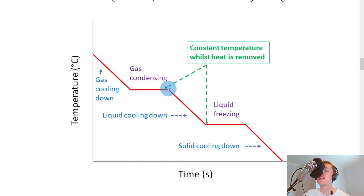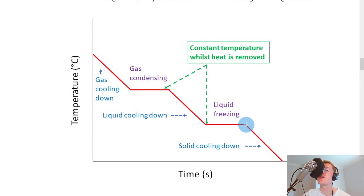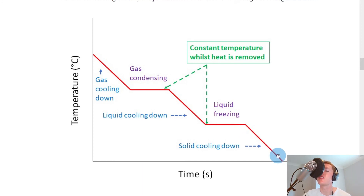Taking our liquid and continuing to remove heat from it, its temperature will decrease over time until it reaches its freezing point. It will start to freeze at this point and take time to do so whilst we continue to remove heat. Then all of the liquid has completely frozen into a solid. Again, we've got a constant temperature whilst the liquid was freezing into the solid. If we continue to remove heat from the solid, it just cools down and its temperature decreases over time, but we don't get any other changes in state.